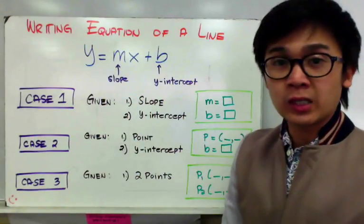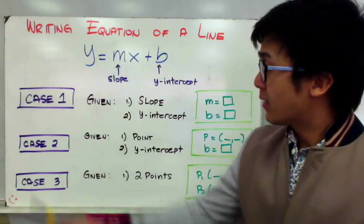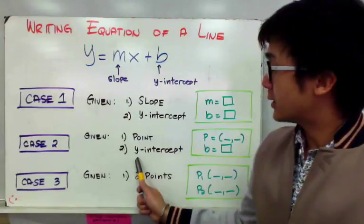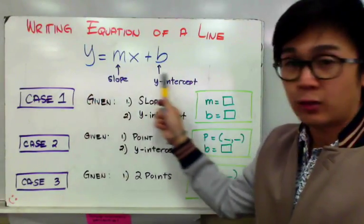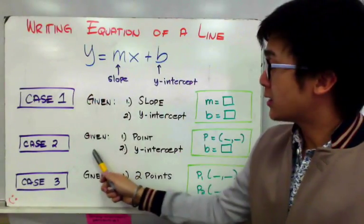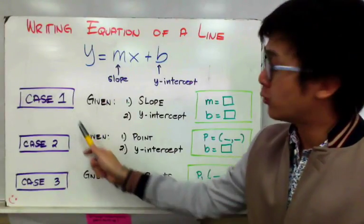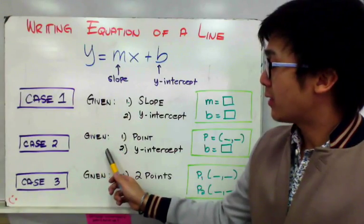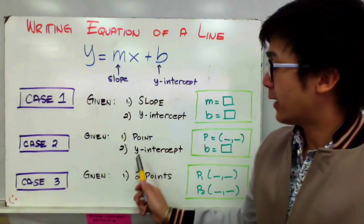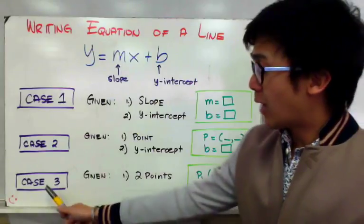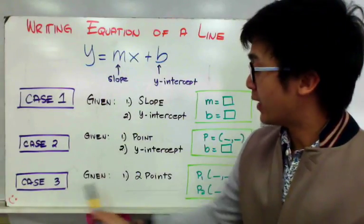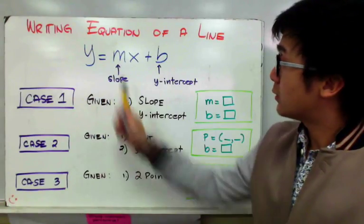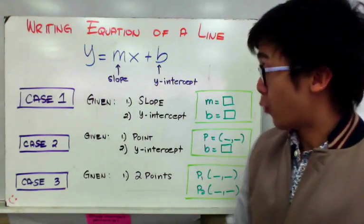There are two more cases we're going to be working on in this lesson. The second case is when we have a point and we have the y-intercept, then we need to find the equation of a line. This requires a bit more work than case one because we need to find the slope using the point and the y-intercept. For our third case, we will be given two points and asked to find the equation of a line using the slope-intercept form.